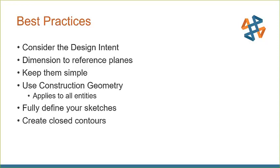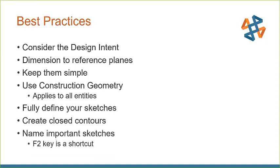Create closed contours — you want a nice closed loop, essentially connecting the dots if you trace the outside of your sketch. That determines whether you create a standard feature or a thin feature in SolidWorks. Also, I like to name important sketches. You can hit F2 on your keyboard — that's a renaming shortcut key inside Windows — and it works for all your sketches and features in the Feature Manager tree.